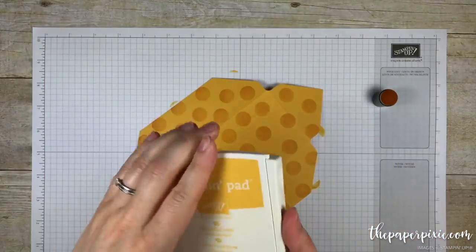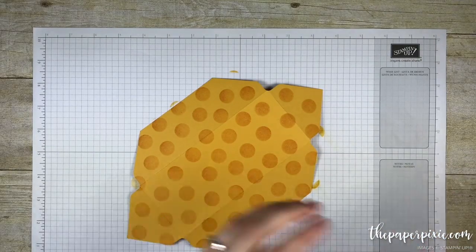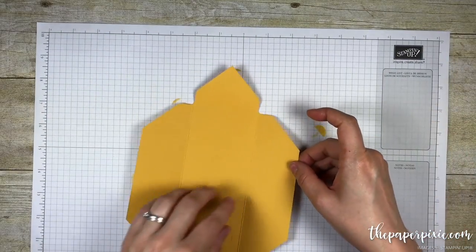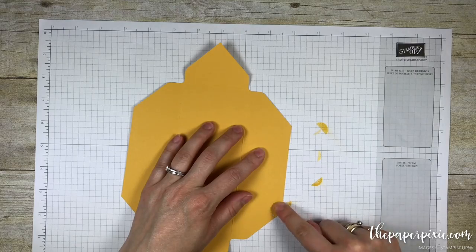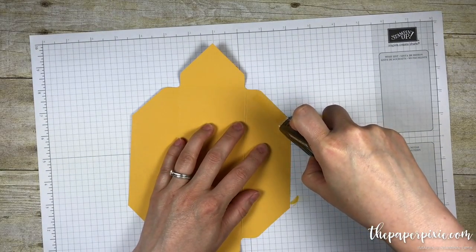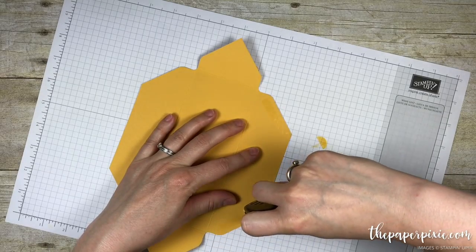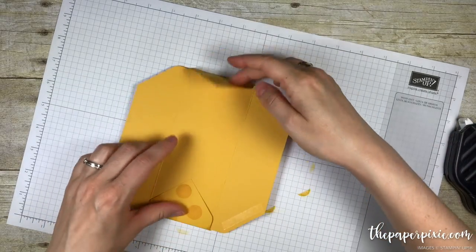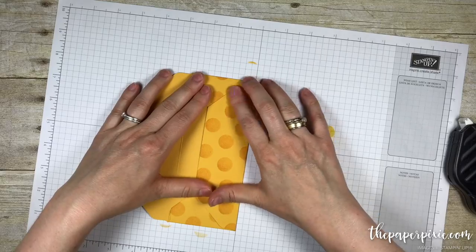Now that those polka dots are done, we can go ahead and put our envelope together. I am just going to add adhesive on these diagonal sides right here and I am going to use Fast Fuse. Fold in those side flaps and fold the bottom flap down.